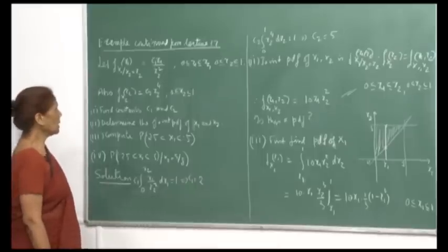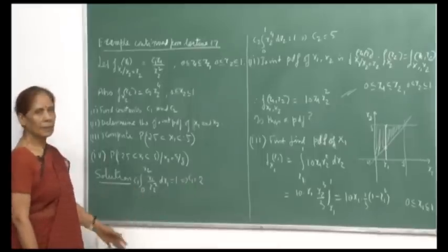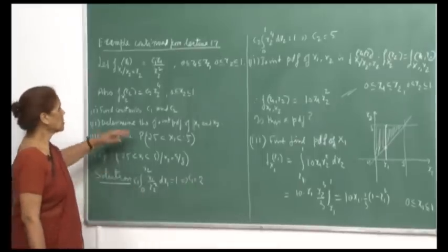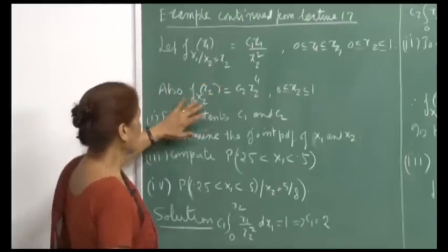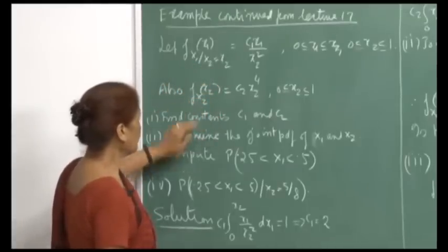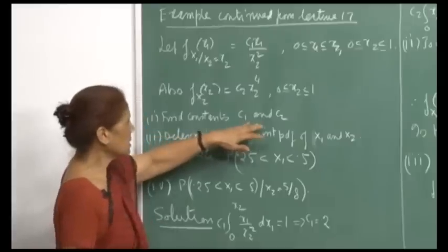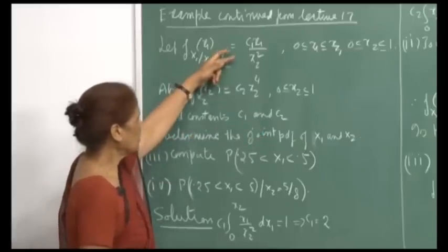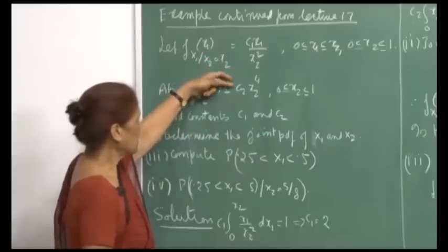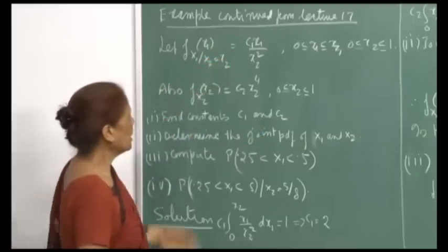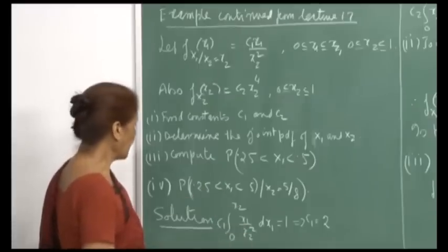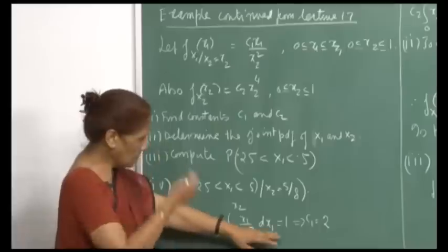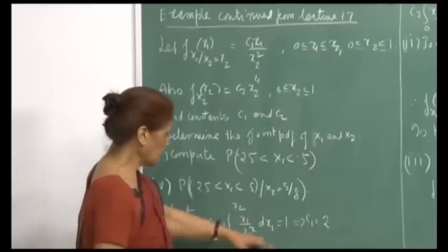I will continue with the example I was discussing at the end of lecture 17. This was the conditional PDF of x1 given x2 equal to x2, and we were given the marginal of x2. We had to find constants c1 and c2. The criteria is that they should be PDFs, so the integral in the specified region must be 1. We computed these in the last lecture.